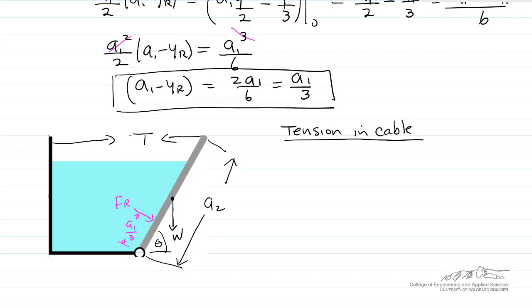To calculate the tension in the cable, the sum of moments around the hinge equals zero because it's not moving. So zero equals Fr times the distance a1/3.